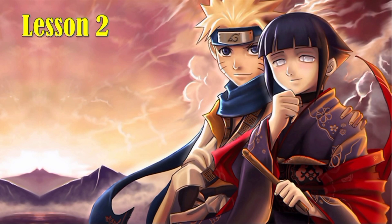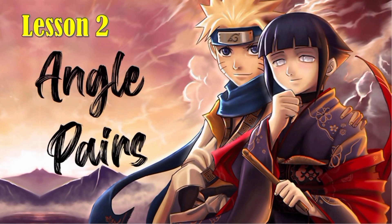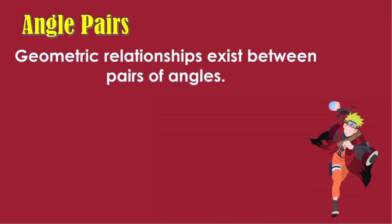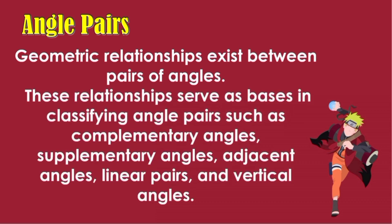Lesson No. 2: Angle Pairs. Geometric relationships exist between paired angles. These relationships serve as basis in classifying angle pairs, such as complementary angles, supplementary angles, adjacent angles, linear pairs, and vertical angles.